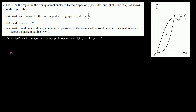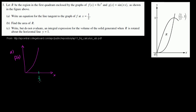Let me just redraw it here. The function f of x equals 8x to the third looks like this. This is our f of x axis and this is our x axis. We want the equation for the line tangent at x equals one half, so this is x equals one half.